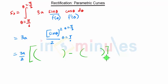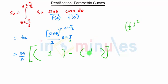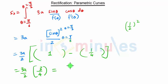Applying the limits for S2: when θ = π/2, we get sin²(π/2) = 1² = 1. When θ = π/6, we get sin²(π/6) = (1/2)² = 1/4. So 1 minus 1/4 equals 3/4, giving us S2 = 3a/2 × 3/4 = 9a/8.